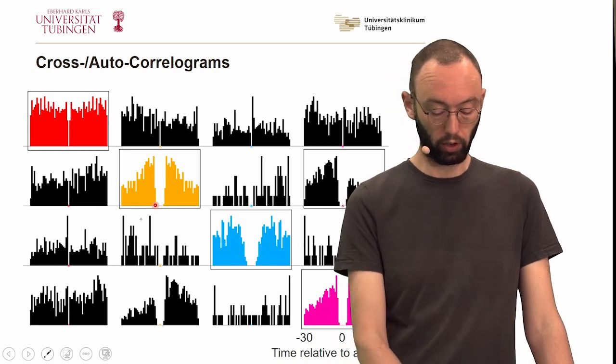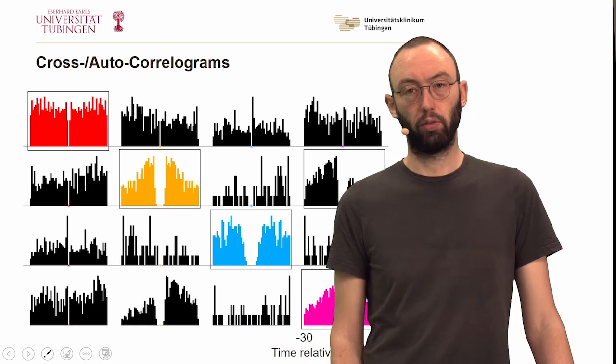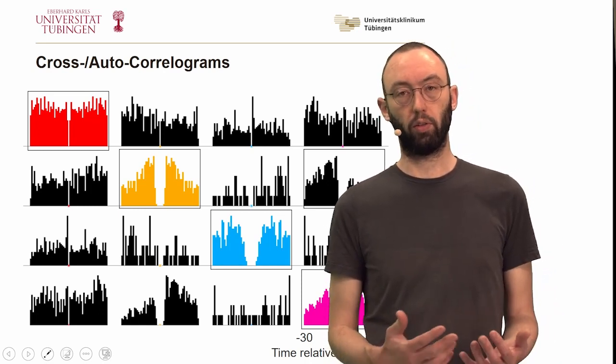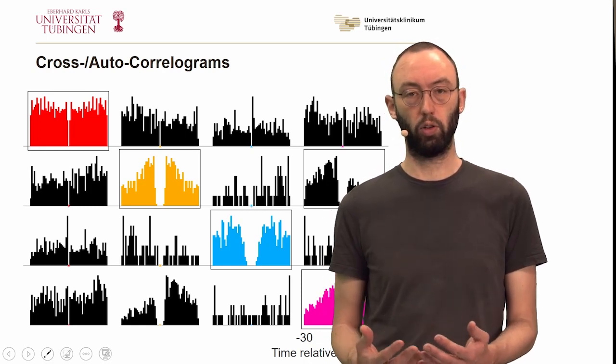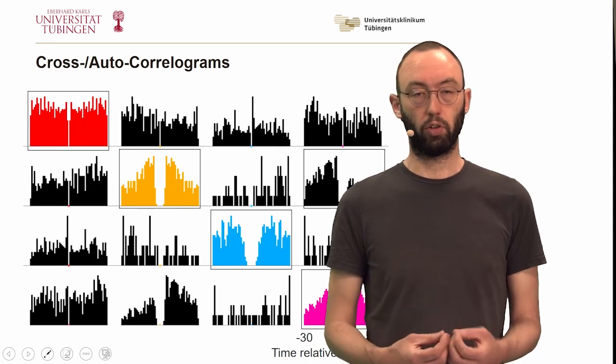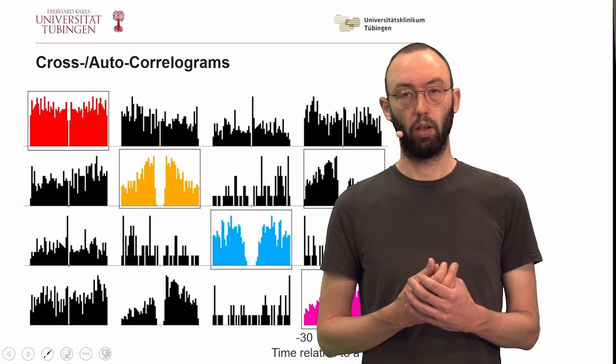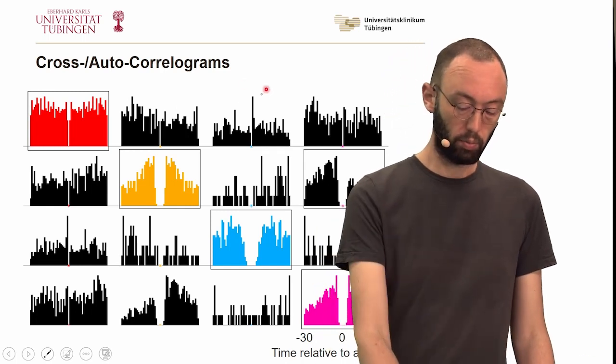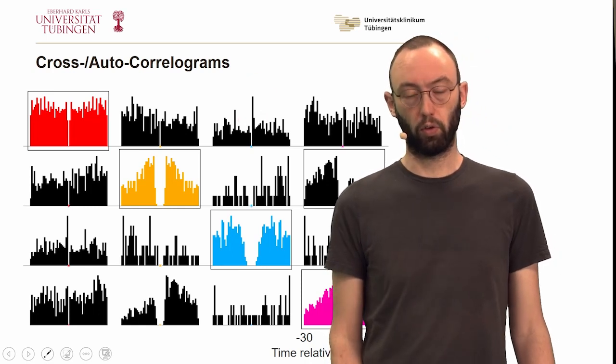In addition, if we look at the structure of the cross-correlograms, for two arbitrary neurons, or for two arbitrary clusters, we don't expect necessarily to be much structure there. In very rare instances, one can find coupled neurons where a spike actually leads to a spike in the other neuron. But this is not obviously the case here.